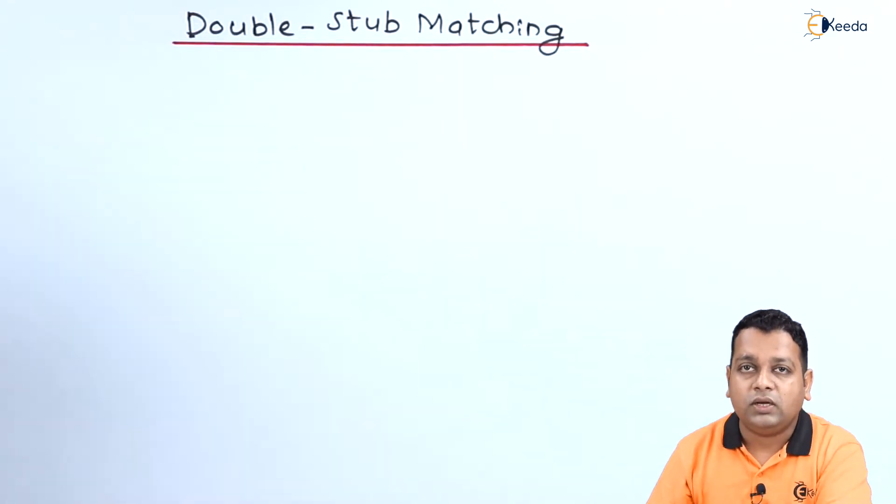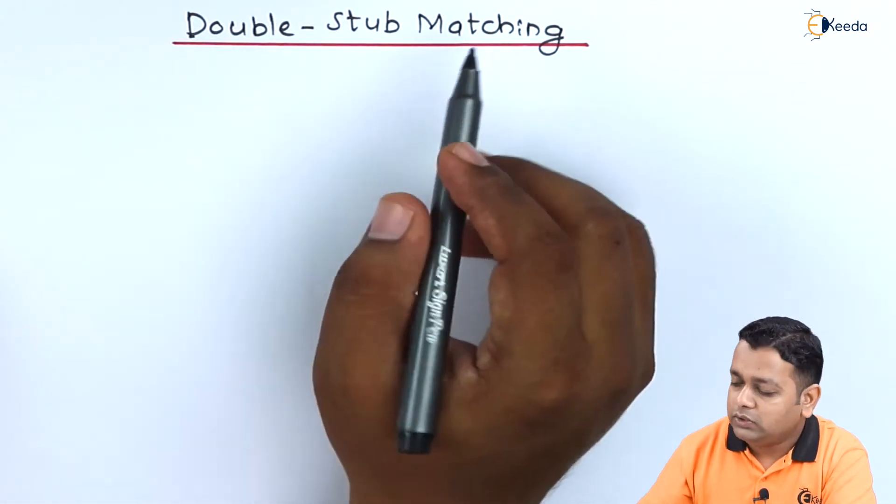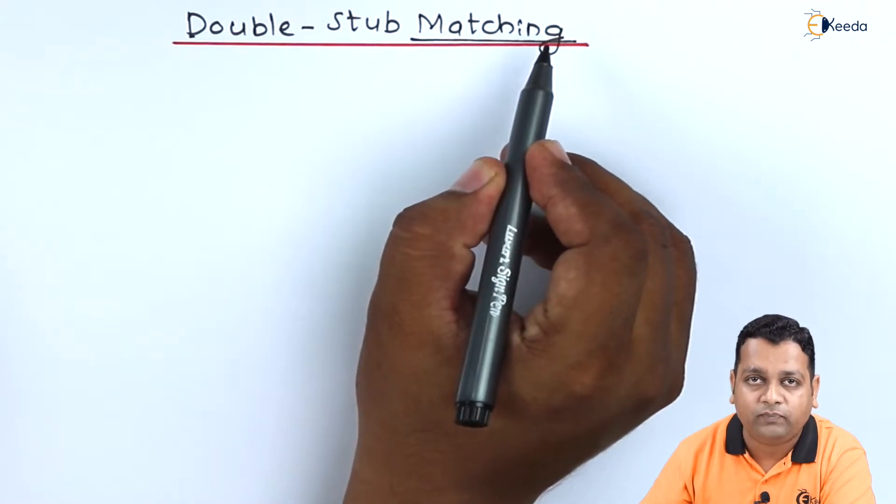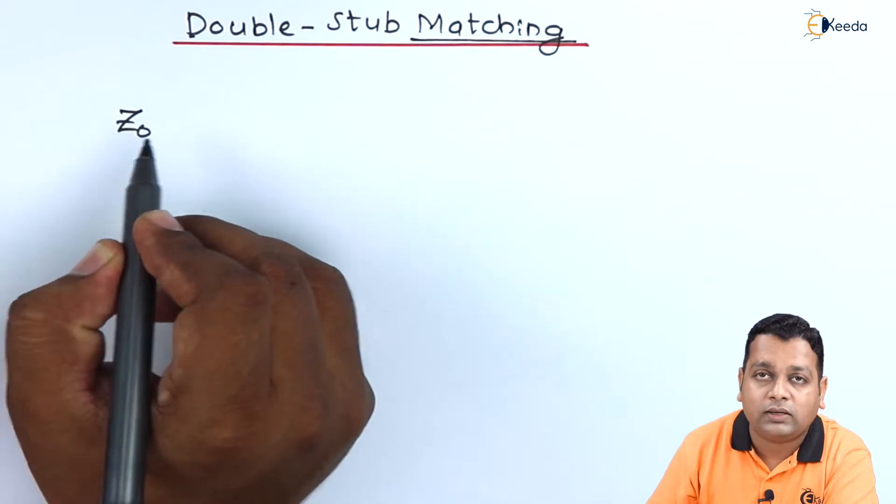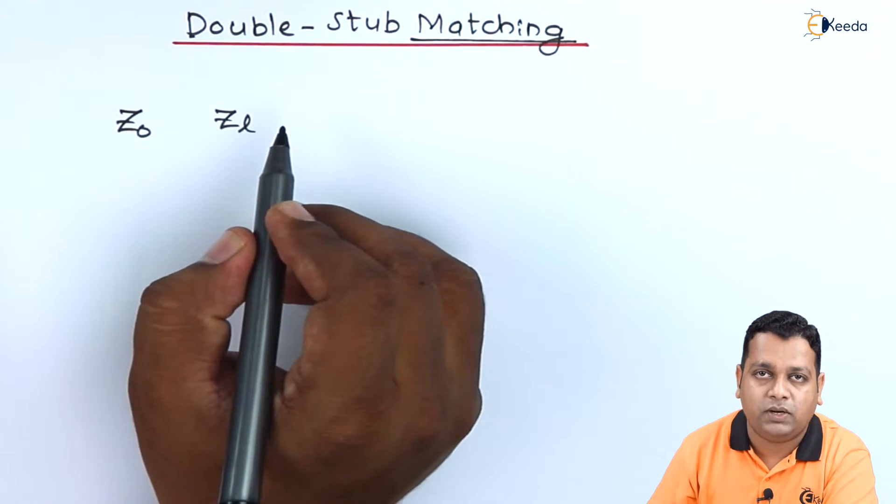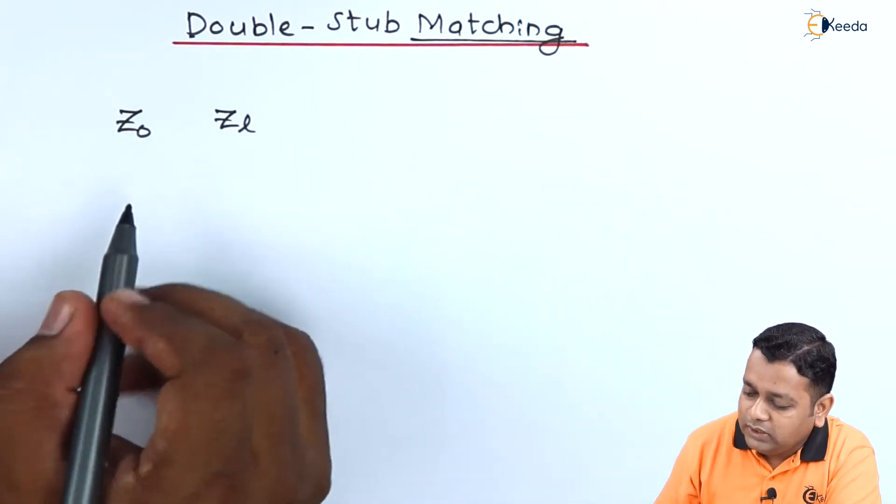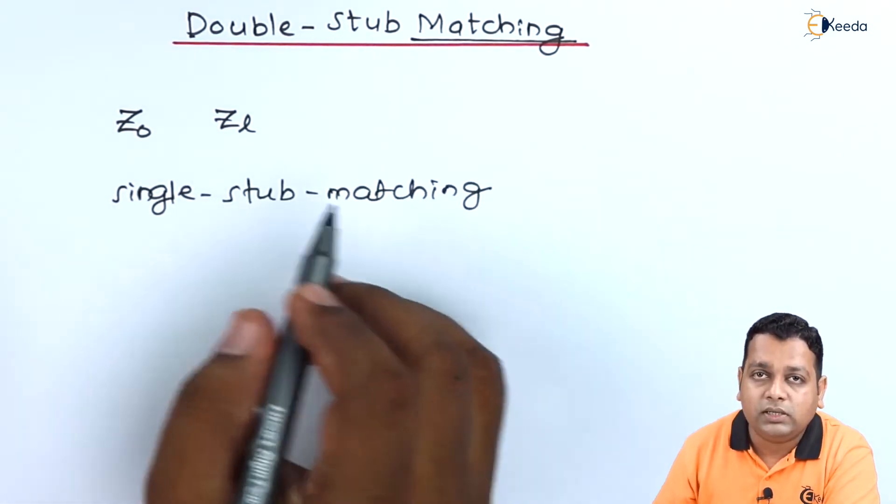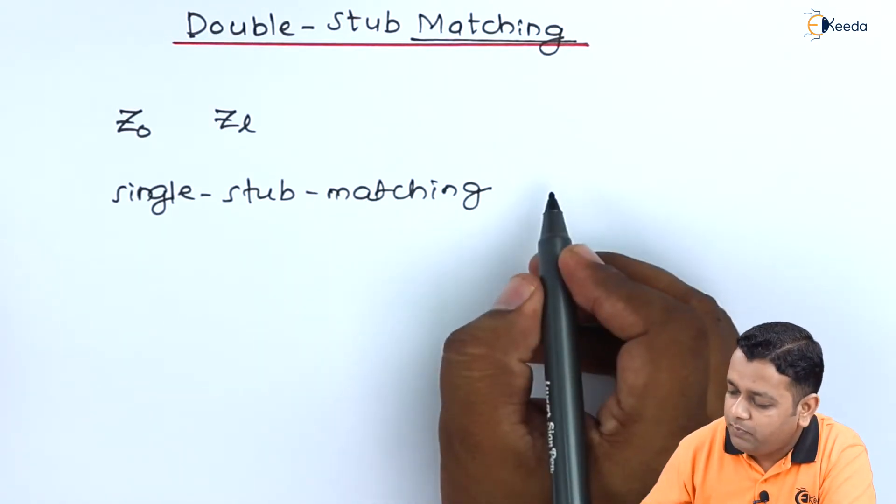So here we start with our topic double-stub matching. As the previous case, matching refers to the impedance matching from the characteristic impedance of the transmission line to the load impedance applied to the top. Now as we know, single-stub matching is sometimes impractical.